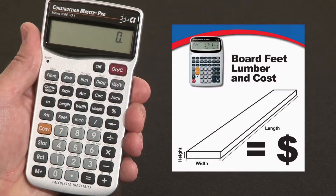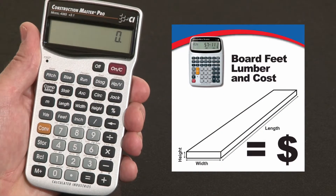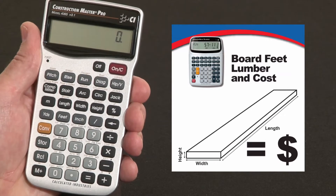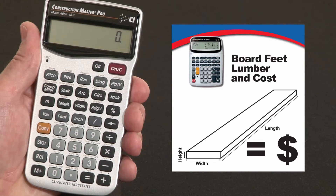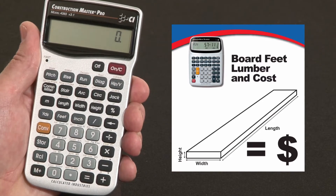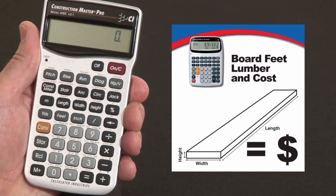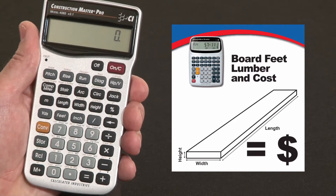Now let me show you how to calculate board feet, lumber, and costs on your Construction Master Pro. Keep in mind the keystrokes will be exactly the same if you're using the Trig or the desktop models. The board foot function handles unitless entries just the way you say them, for example 2x4x8.